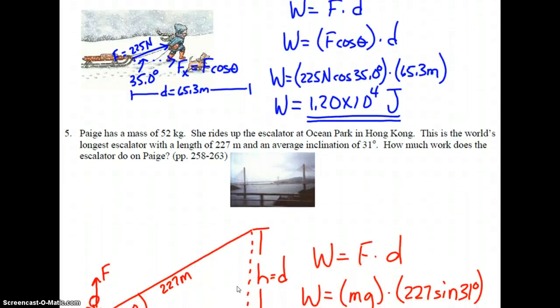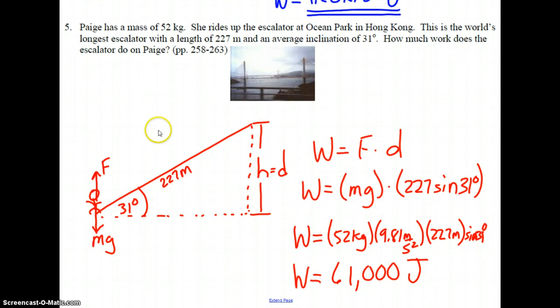Lastly, number five. Paige has a mass of 52 kilograms. She rides up the escalator at Ocean Park in Hong Kong. This is the world's longest escalator with a length of 227 meters and an average inclination of 31 degrees. How much work does the escalator do on Paige? Well, the escalator has to take her weight, apply a force to it to lift her a vertical height that we need to determine here, knowing that the escalator itself is 227 meters long and is inclined at 31 degrees.